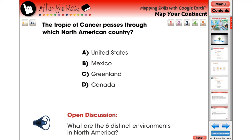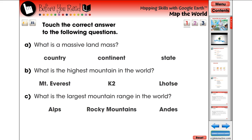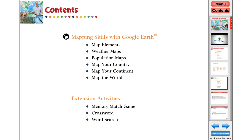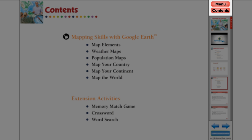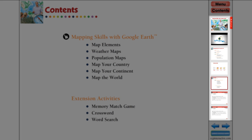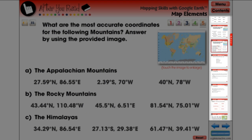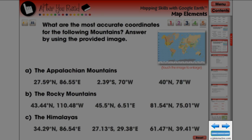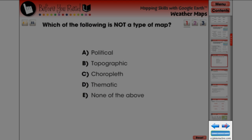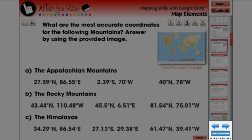From here, you may continue on to the following chapter, or navigate back to the menu or content screen by touching the appropriate icons at the top of the navigational toolbar. You may also scroll through the thumbnail icons and touch one to jump to a specific screen page, or touch the navigational arrows at the bottom of the toolbar to move forward or backward one screen page at a time.